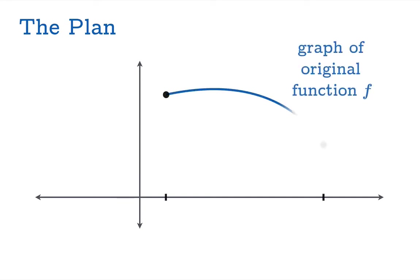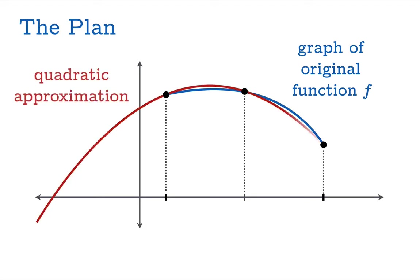So let's say you have your original function. Here's the graph of a function on a closed interval. What we will do is select the midpoint of the interval, find that function value, and then use these three function values — these three points on the graph — to fit a quadratic polynomial graph, in other words a parabola, on those three points.